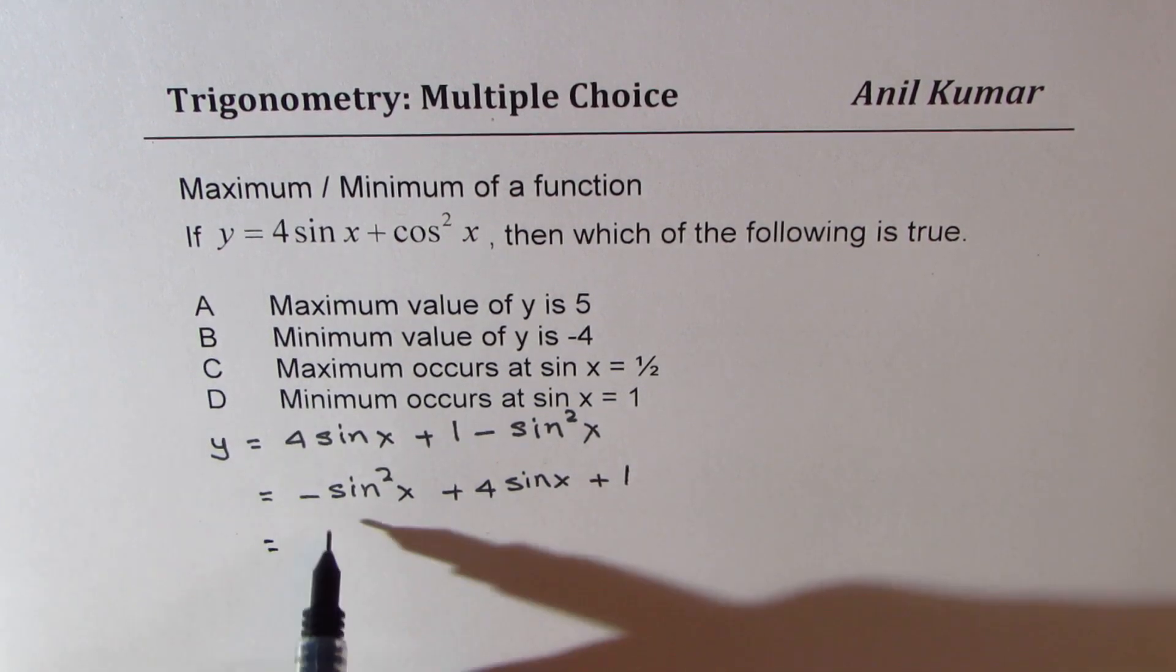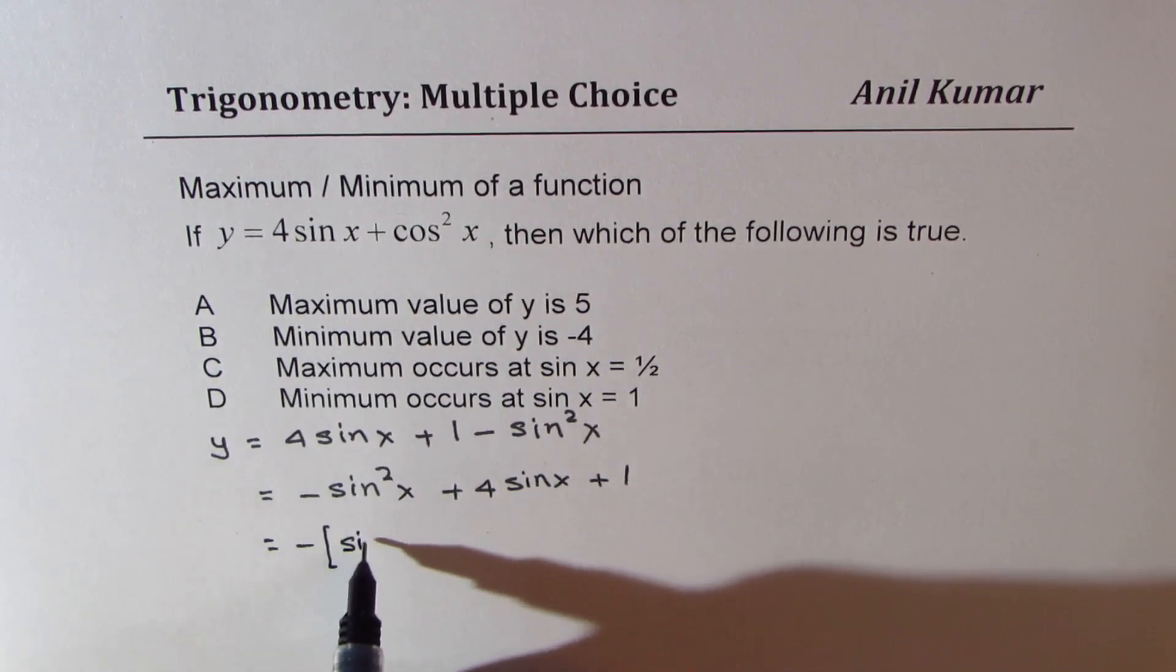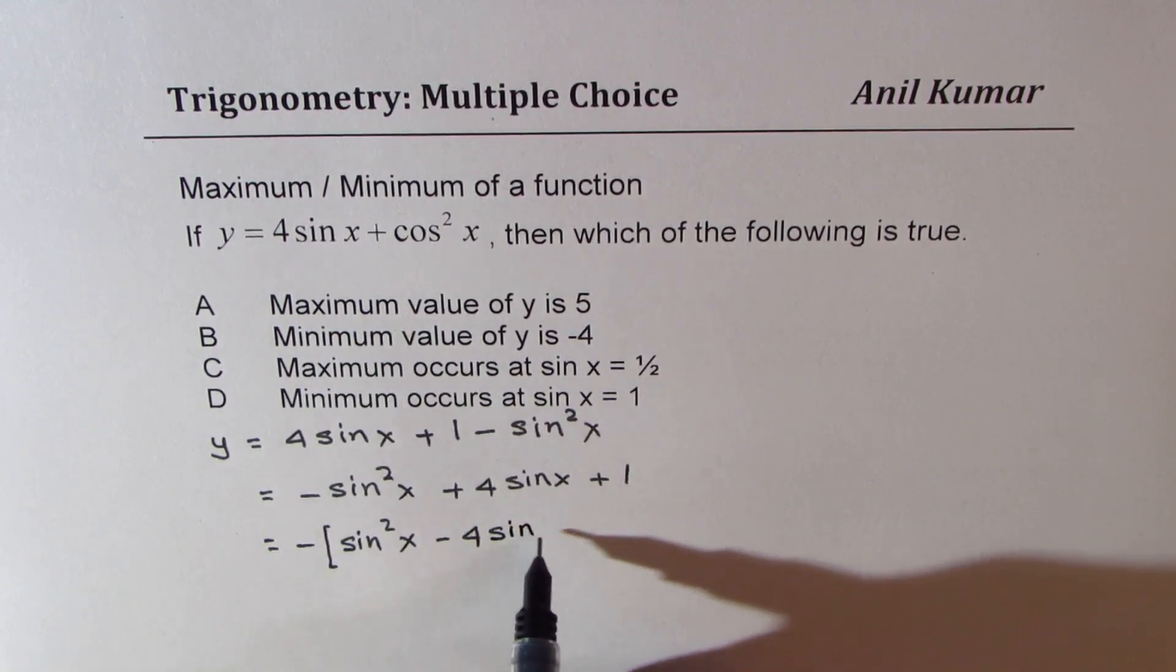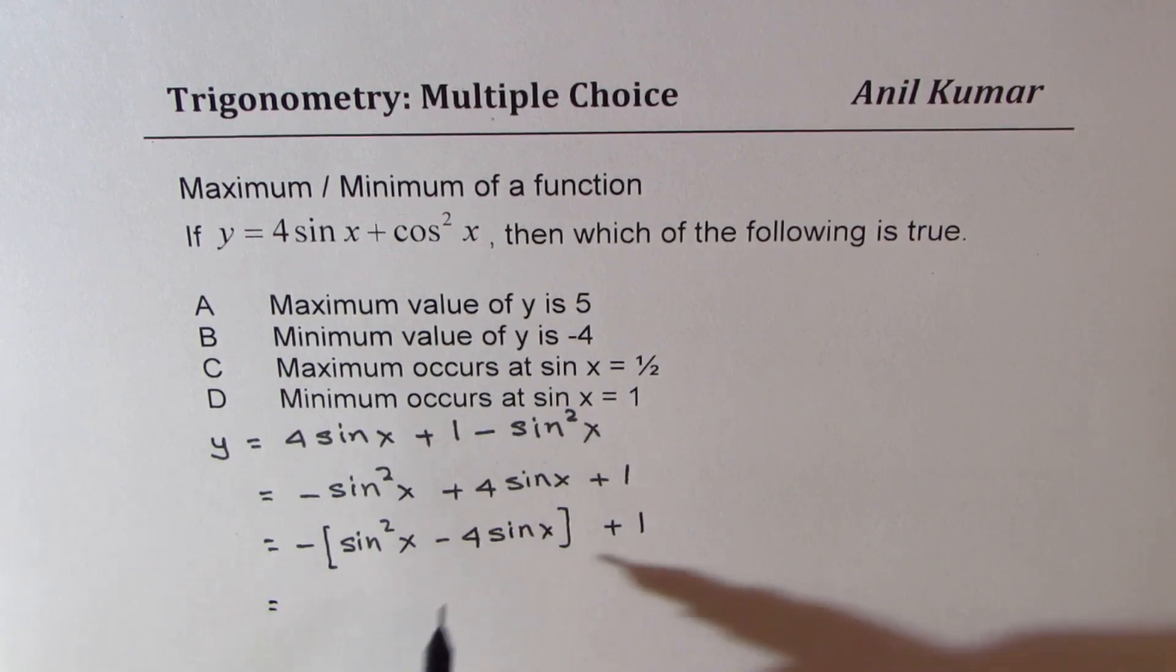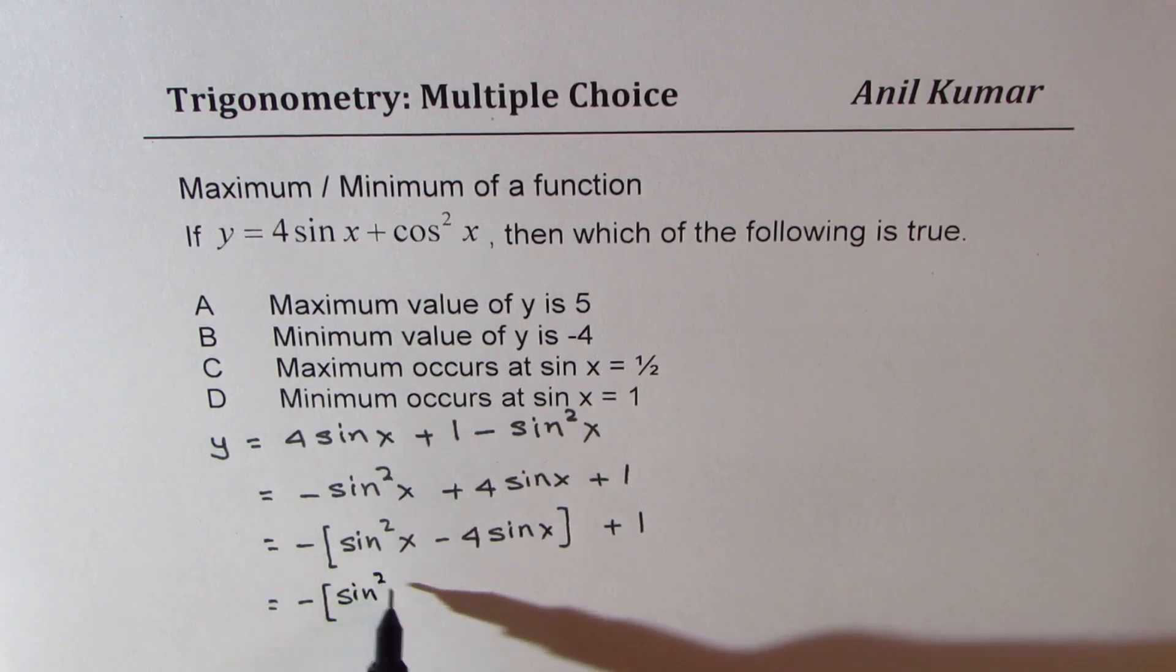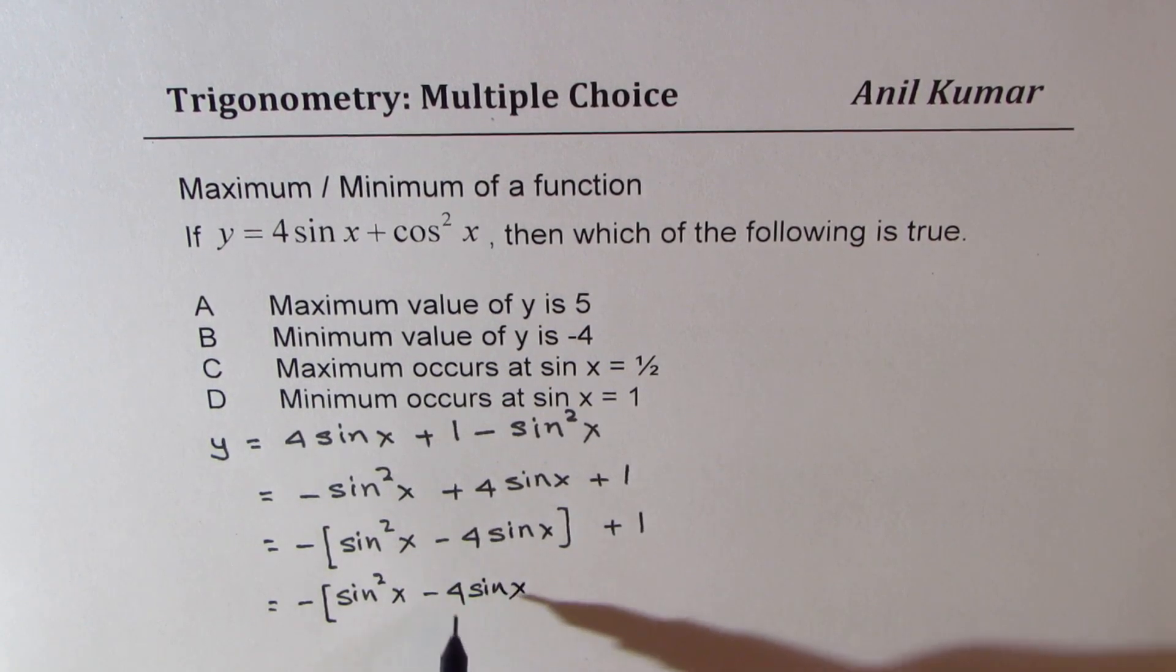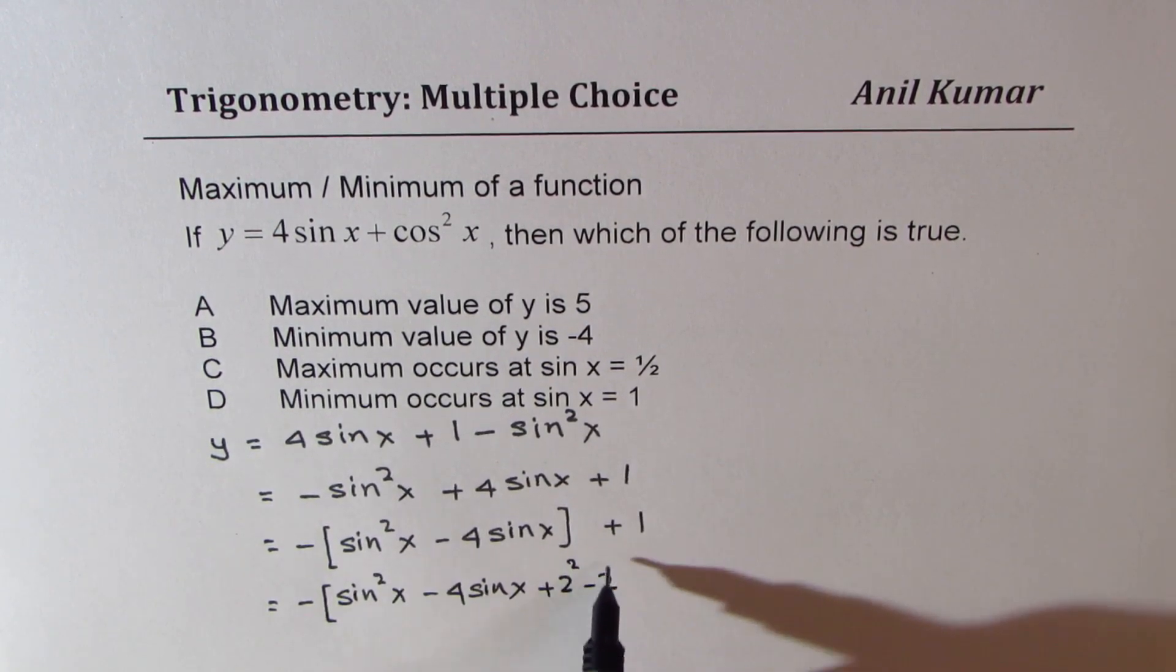So to complete the squares, let me take minus out first. So we get sine squared x minus 4 sine x plus 1. Now, we'll do half of this 4 and add and subtract its square. That means we'll write this as sine squared x minus 4 sine x. Half of 4 is 2. So we'll add 2 squared and also subtract 2 squared. That's completing the squares, right?